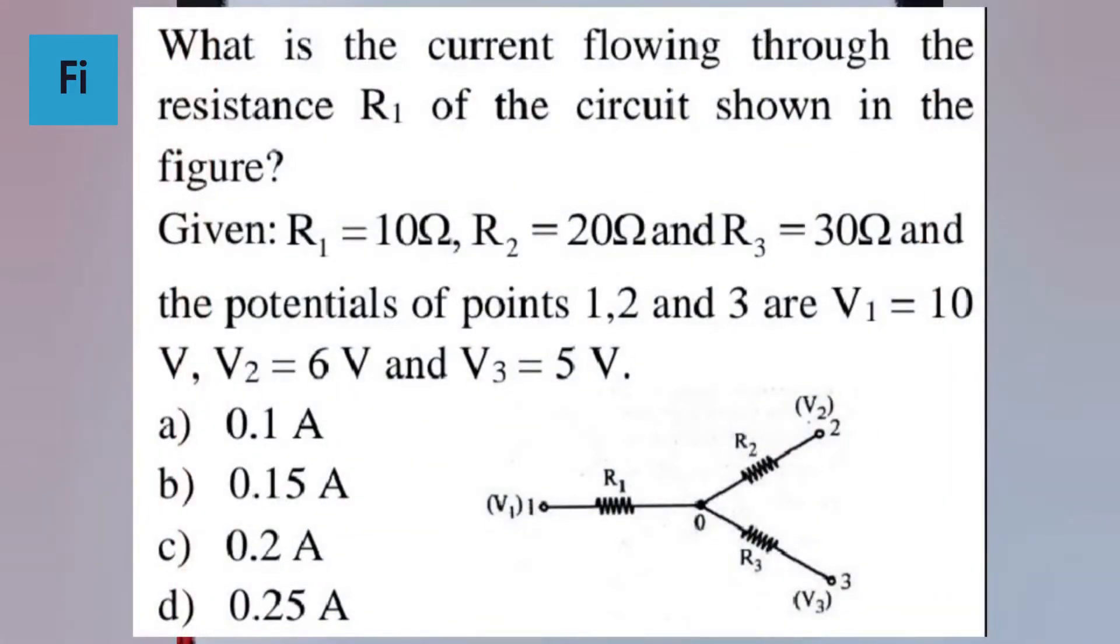The question asks what is the current flowing through resistance R1 of the circuit shown in the figure. Given R1 is 10 ohms, R2 is 20 ohms, R3 is 30 ohms, and the potentials at points 1, 2, and 3 are V1 equals 10 volts, V2 equals 6 volts, and V3 equals 5 volts.